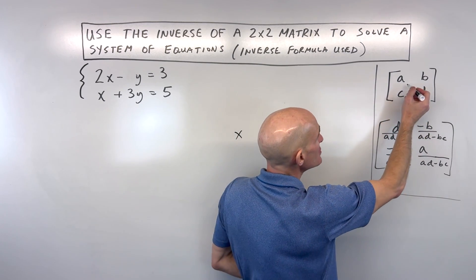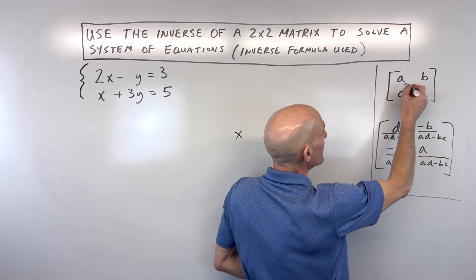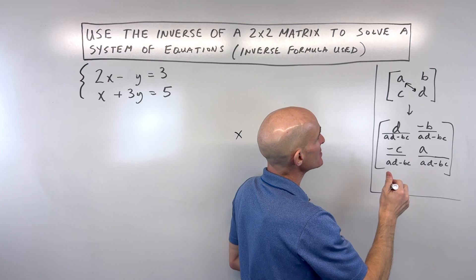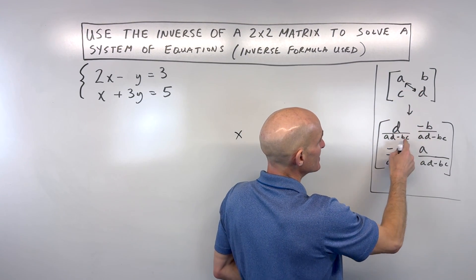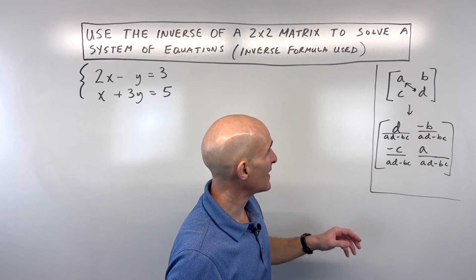And what you would do is you would switch these two elements here, A and D, so they switch positions. And then what you do is you make the B and the C the opposite sign. So if they're negative, you make them positive. Positive, you make them negative.